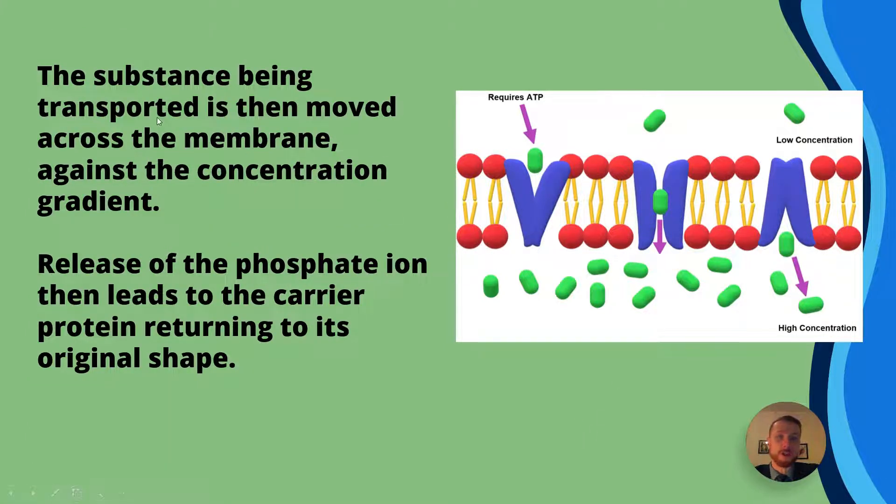The substance being transported is then going to be moved across that selectively permeable membrane against or from a low to high concentration. Now the release of the phosphate ion, so remember the phosphate ion was bound to it while the molecule was going across, when that phosphate ion gets released this is going to lead to the carrier protein returning to its original shape. Again think about specific complementary tertiary protein structure here.